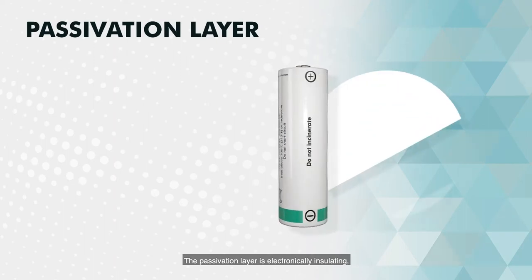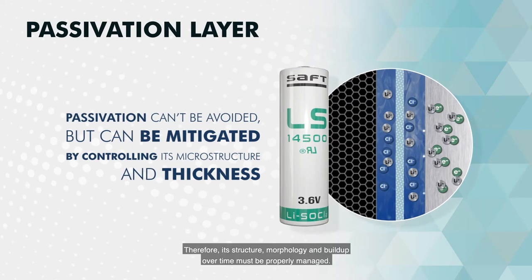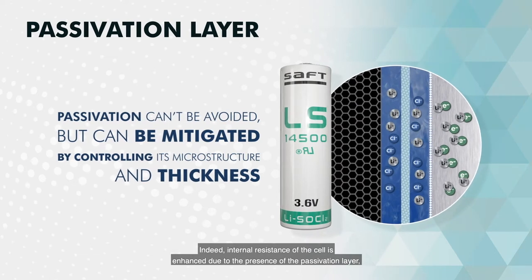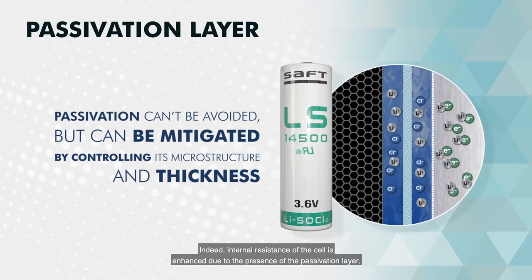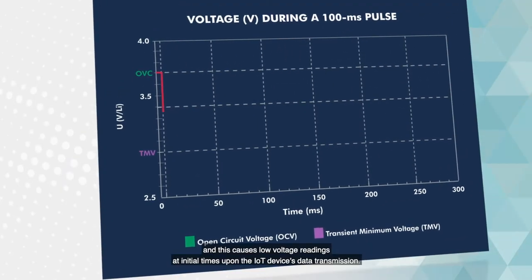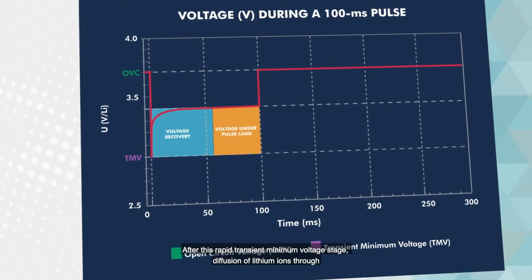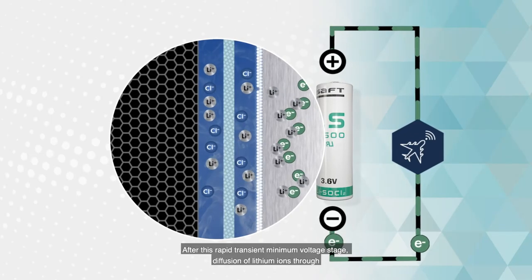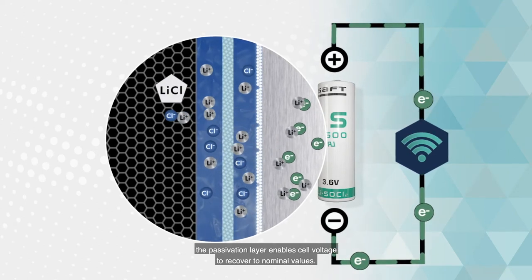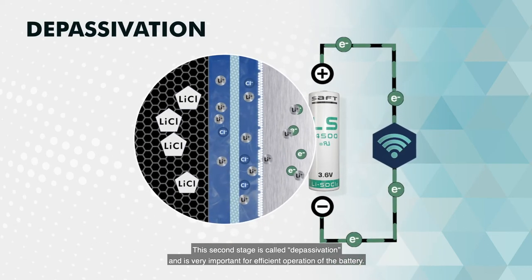The passivation layer is electronically insulating, which may have some detrimental consequences for battery operation. Therefore, its structure, morphology and build-up over time must be properly managed. Indeed, internal resistance of the cell is enhanced due to the presence of the passivation layer, and this causes low voltage readings at initial times upon the IoT device's data transmission. After this rapid transient minimum voltage stage, diffusion of lithium ions through the passivation layer enables cell voltage to recover to nominal values. This second stage is called depassivation and is very important for efficient operation of the battery.